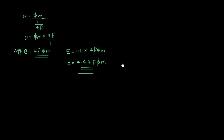For the secondary winding, an EMF is induced. The RMS value is taken for both primary and secondary windings. The induced EMF in each winding is proportional to the number of turns. For the primary winding, the induced EMF RMS value is E1.